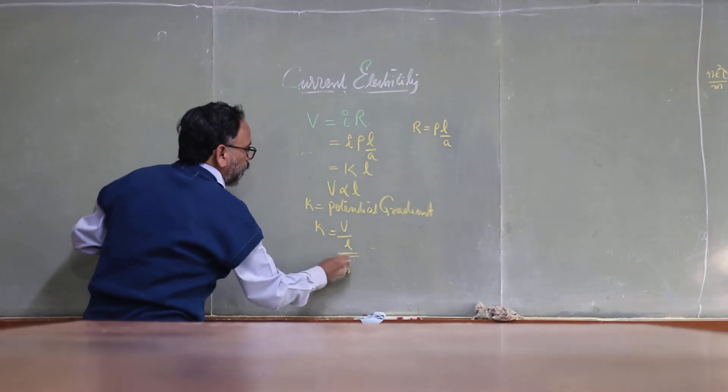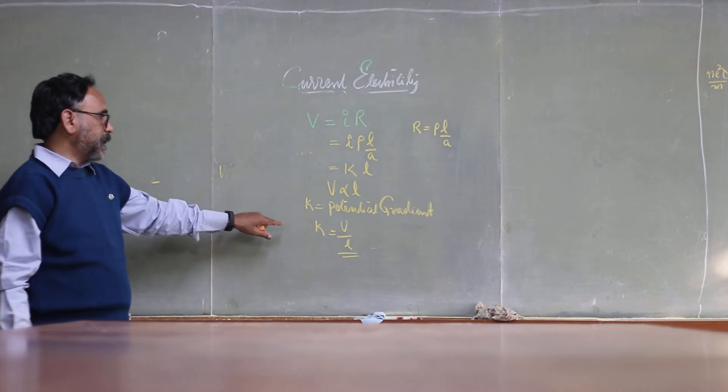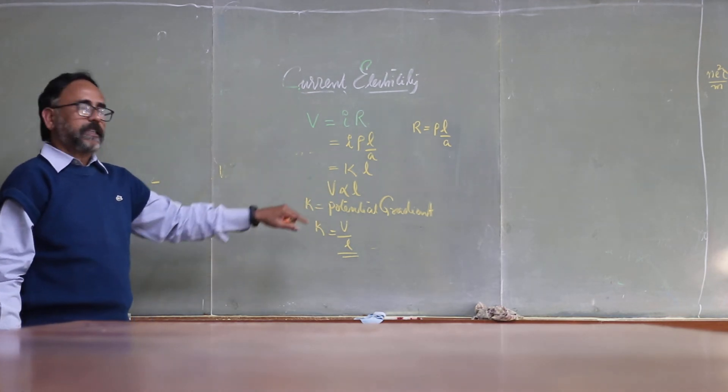If length is more, then potential gradient is less and the potentiometer is very sensitive.